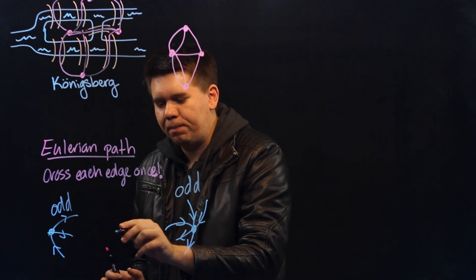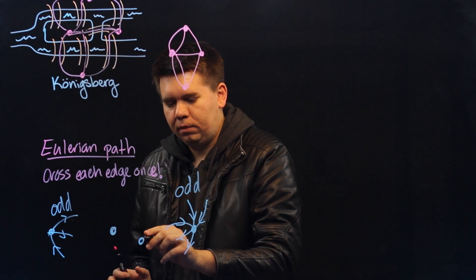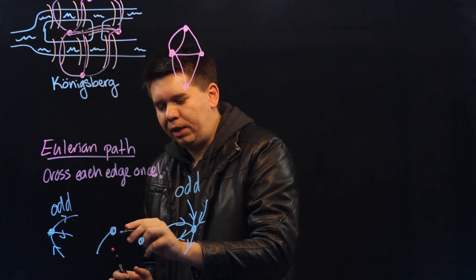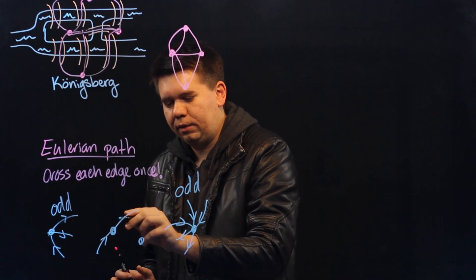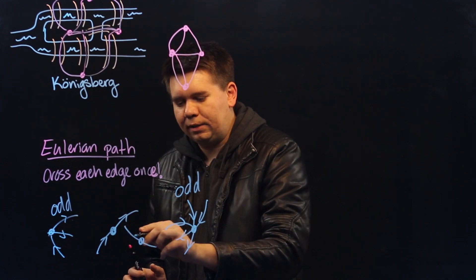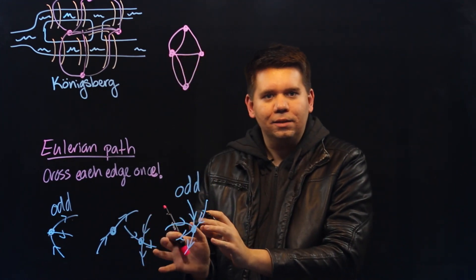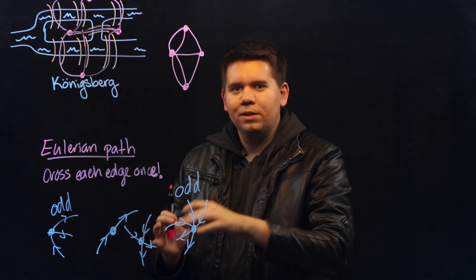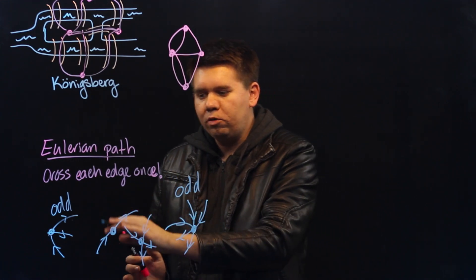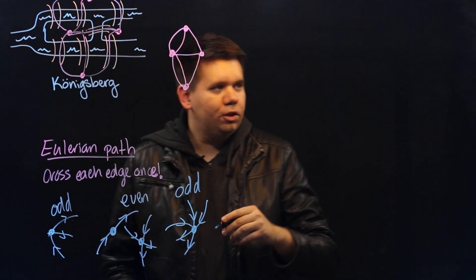For all the points you pass through in between, for each one you'll have to enter and then exit. Perhaps you'll enter and exit more than once. But whatever the case, if you pass through once or twice or three times or however many times, those will all have degree even.